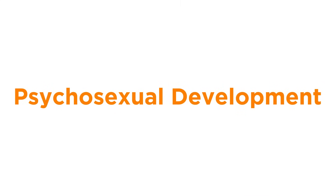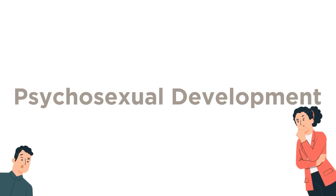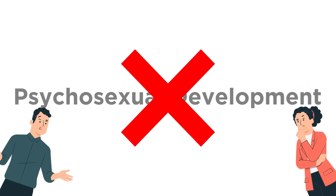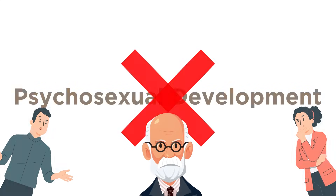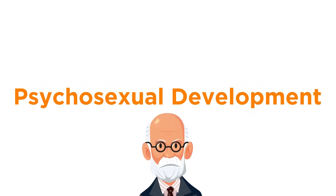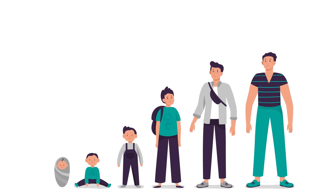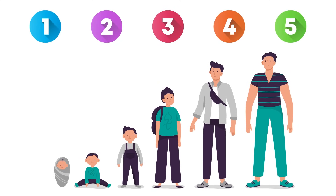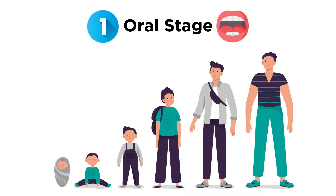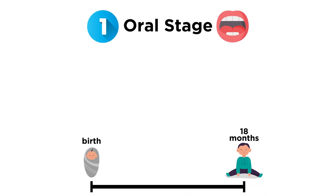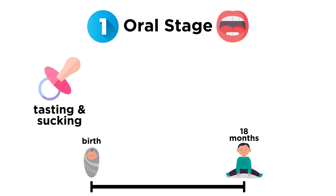Freud also had a theory of psychosexual development. As a disclaimer, this aspect of his work is quite controversial and not really supported by the field anymore, but our examination would be incomplete without it. Essentially, Freud believed that children are born with a libido, or an urge for sexual pleasure. As a child develops, they go through different stages where they seek pleasure from different objects. First is the oral stage, which takes place from birth until about 18 months of age. In the oral stage, infants seek pleasure through their mouths, with a fixation on tasting and sucking.